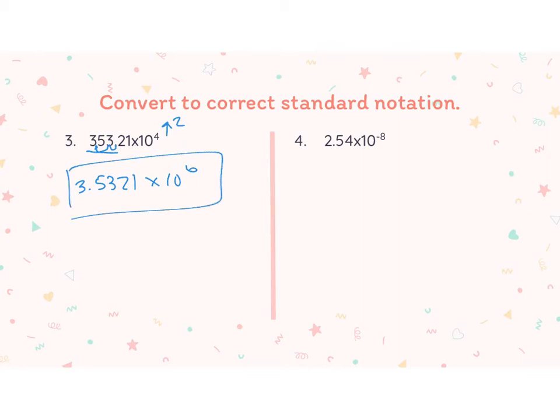I moved the decimal back two places, making the number smaller, so I balance it by making the exponent bigger. Number four, 2.54 times 10 to the negative eighth — this one is actually correct. I don't have to change it at all. I have one digit in front of the decimal point, so my scientific notation is already correct.